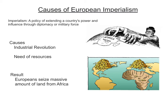Causes of European imperialism. Imperialism is a policy of extending a country's power and influence through diplomacy or military force. What caused this European imperialism? The Industrial Revolution — Europeans needed a massive amount of raw materials or resources in order to fuel it. And so they turned to Africa because of its massive size and amount of land and resources.